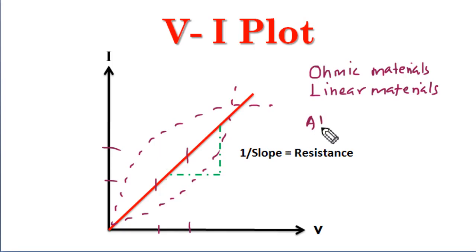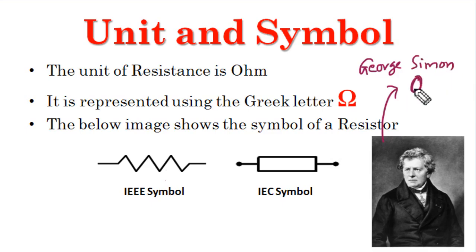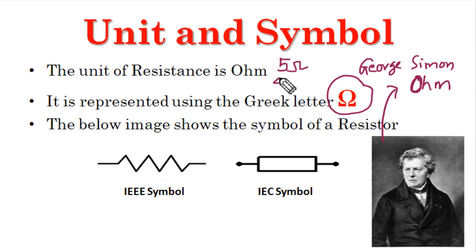Another limitation is that Ohm's law applies only at constant temperature. When the temperature varies, the resistance also varies, so the voltage-current proportionality will not hold. That is also very important to know about Ohm's law. The unit of resistance is the Ohm, named after George Simon Ohm who formulated Ohm's law. It is represented using the Greek letter omega, and while writing values such as 5 ohms or 4 ohms, we use this symbol to represent resistance.